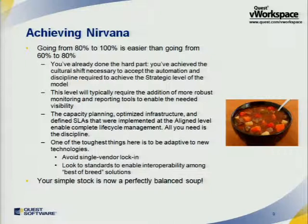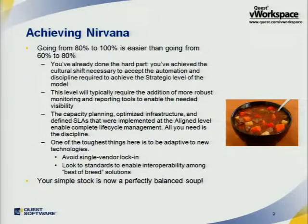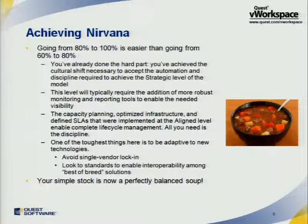Once you've hit that level and have the automation procedures in place, getting up to 100% — level four in the virtualization management maturity model — is actually fairly easy. You've already done the hard part. You've achieved the cultural shift. Your administrators are now adept at using the automation capabilities that are there. They've standardized their processes and procedures, and everything is easy to work with. You've got capacity planning and an optimized infrastructure — all of these things are in place to enable you to hit that optimized level.